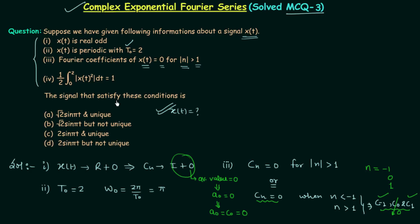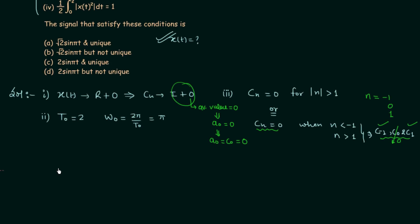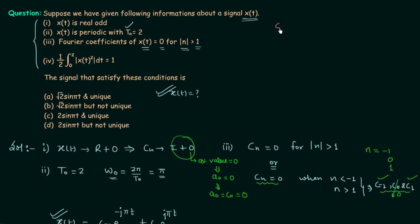We can now write signal xt using the complex exponential Fourier series as: xt = c₋₁ · e^(−jπt) + c₁ · e^(jπt). We also know the expression for coefficient cn: cn equals 1 divided by T₀, times the integral over T₀ of xt multiplied by e^(−jnω₀t) dt.